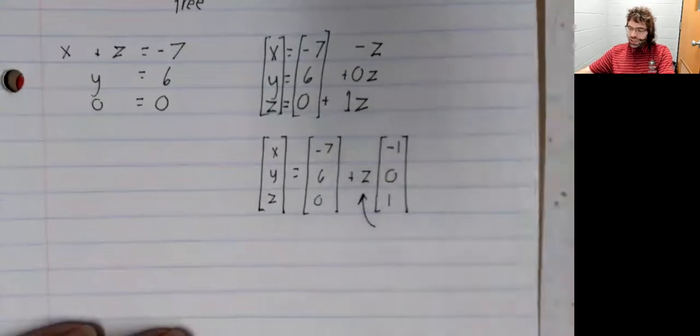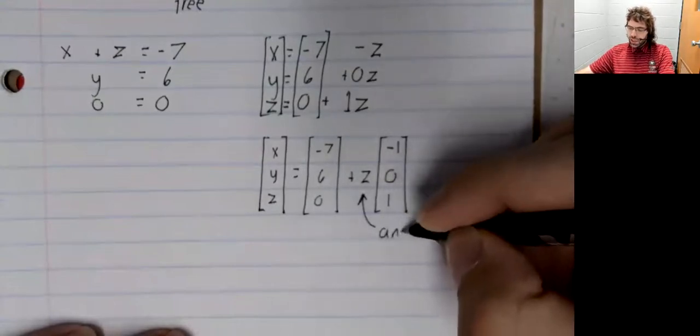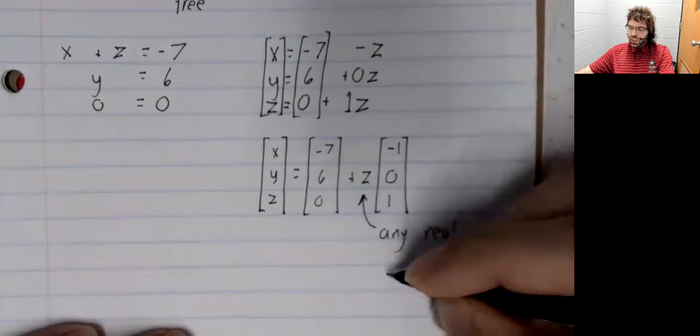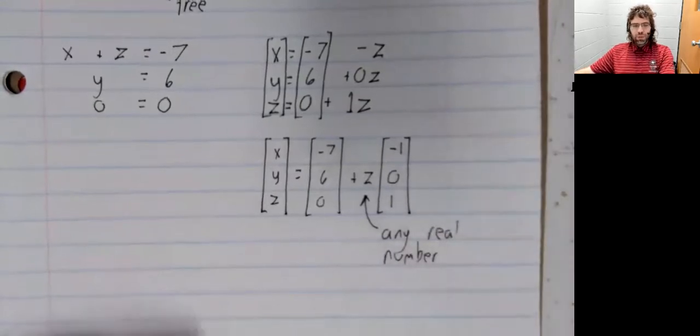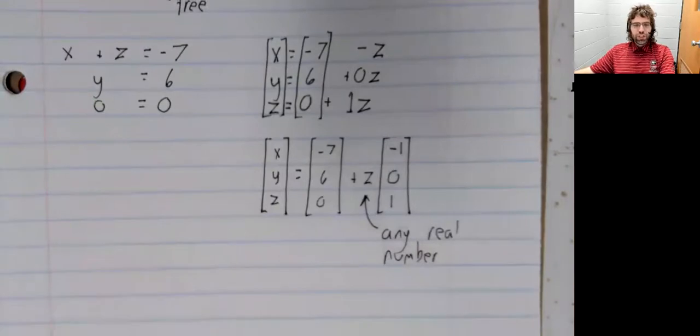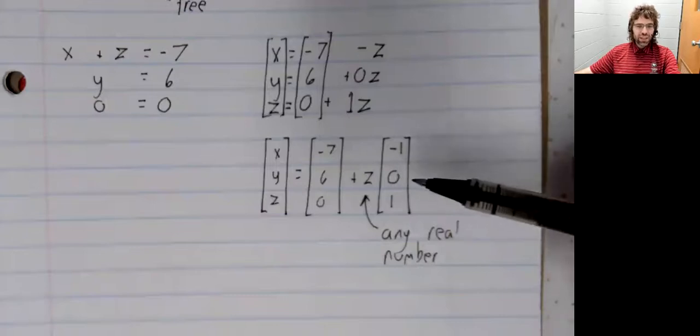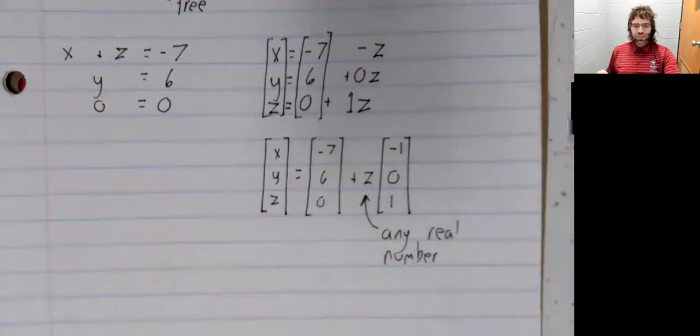And z is free. It can be any real number. And different values of z give you different solutions. So this is in fact an infinite solution set.